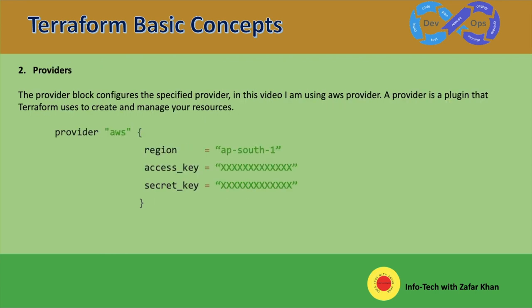Next one is the provider. The provider block configures the specified provider, in this case the AWS provider. Basically a provider is a plugin that Terraform uses to create and manage your resources. Here you can specify the region — which region you want to create your resources in, like Mumbai or some other region. You need to mention the access key and secret key as well to connect to the provider, otherwise it will not work. You can use multiple provider blocks in your Terraform configuration to manage resources from different providers.